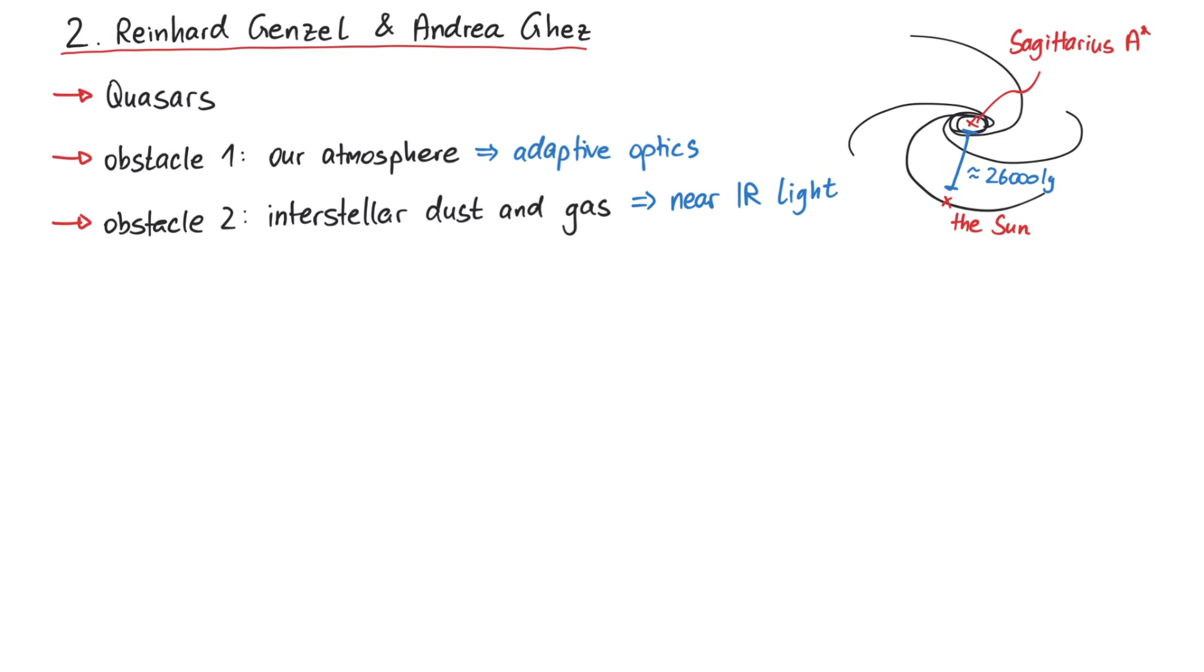Now that we get enough light and are able to remove the atmosphere's interference, what did Genzel and Ghez observe? Both teams wanted to investigate the quasar at the center of our galaxy and the surrounding stars. This is not an easy task, since the stars move rather slowly; both teams performed observations for almost 30 years.